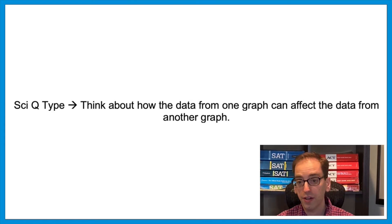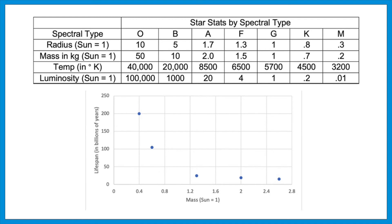This brings up a harder type of question: think about how data from one graph can affect data from another. For example, to relate lifespan to luminosity, mass is the key variable. From the first table, mass and luminosity both go up together or both go down together. So as mass increases, luminosity increases. And from the second graph, as mass increases, lifespan decreases. Therefore, a higher luminosity means higher mass, which means lower lifespan — and vice versa.